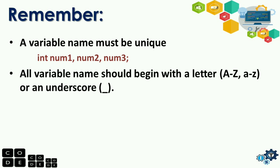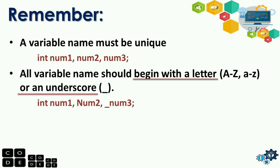Next, all variable names should begin with a letter — either capital or small letter — or an underscore. Example: 'int num1' with small letter n — valid. 'int Num2' with capital N — also valid. 'int _num3' with underscore — also valid. So only a letter or underscore is allowed at the start. Do not start with a number — for example, 'int 1num' is not allowed. Always start with a letter or underscore.